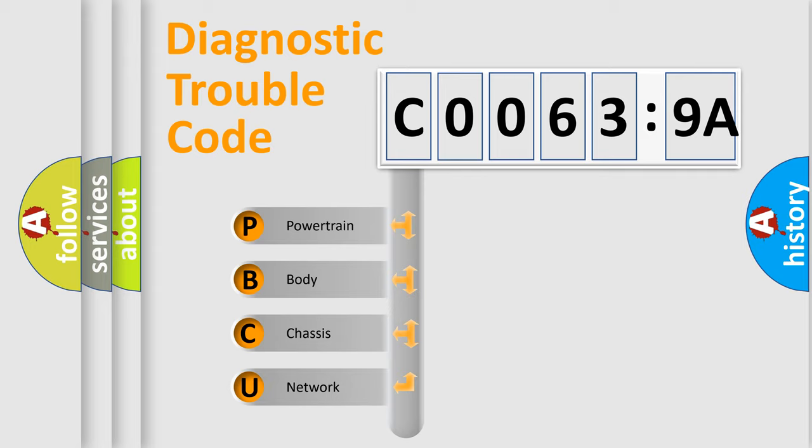If the second character is expressed as zero, it is a standardized error. In the case of numbers 1, 2, or 3, it is a more prestigious expression of the car-specific error.